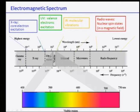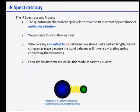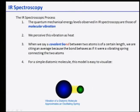Infrared radiation lies between visible and microwave, with frequencies in the range of 10¹² to 10¹⁴ Hz and wavelengths of about 10³ to 10⁵ nanometers. This frequency range corresponds to molecular vibrations. UV-visible spectroscopy is used for valence electronic transitions, while IR spectroscopy is a complementary technique that probes molecular vibrations.